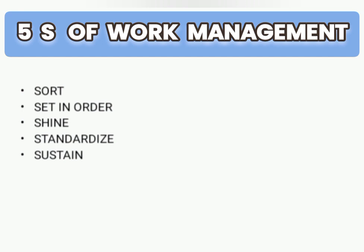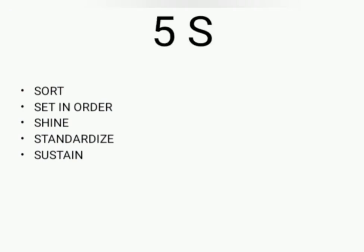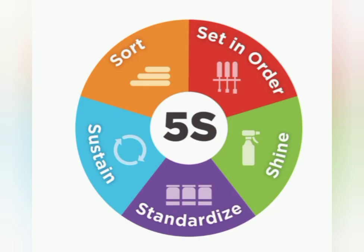The next IEC material is the 5S of work management. First is Sort, secondly Set in Order, thirdly Shine, fourthly Standardize, and fifthly Sustain. The 5S is a system for organizing spaces so work can be performed efficiently, effectively, and safely. This system focuses on putting everything where it belongs and keeping the workplace clean, making it easier for people to do their jobs without wasting time or risking injury.